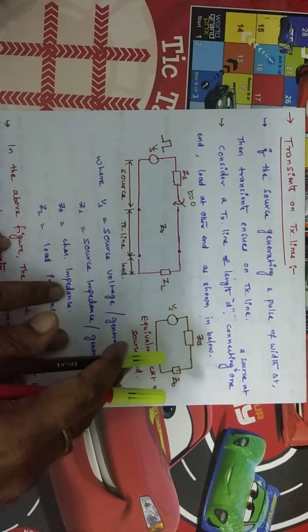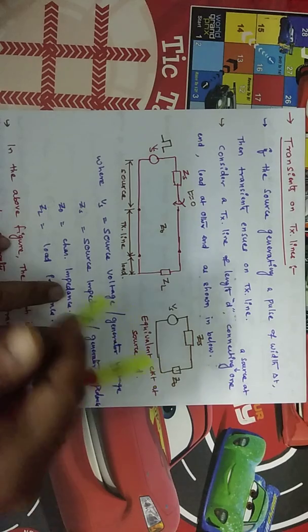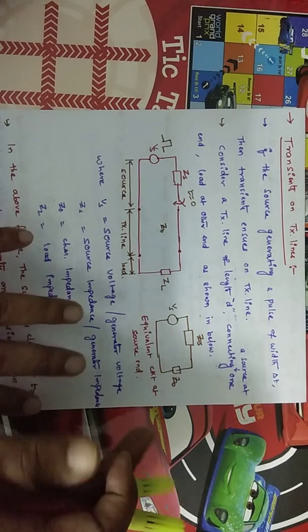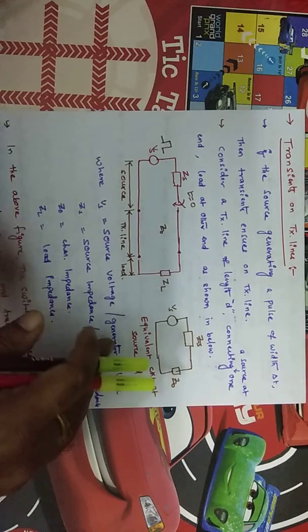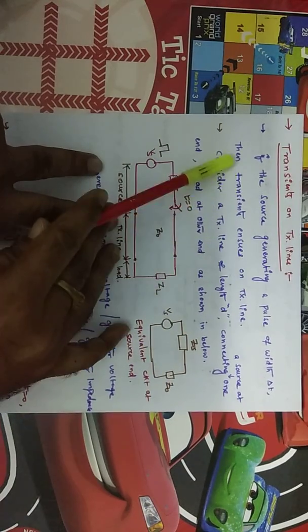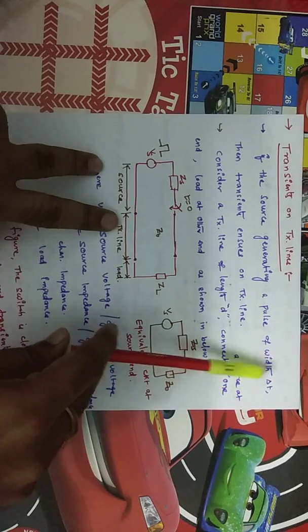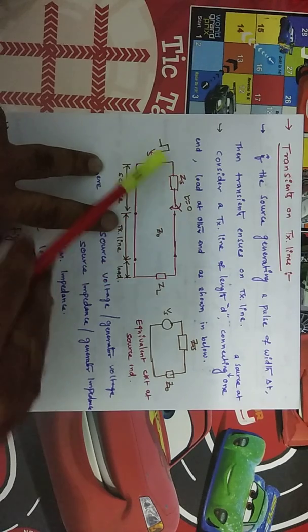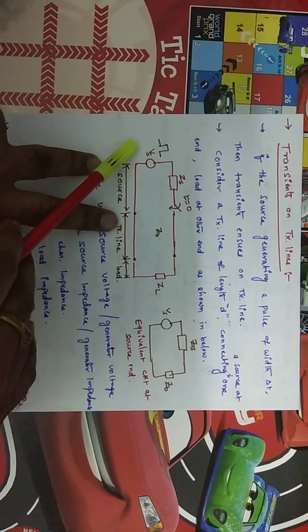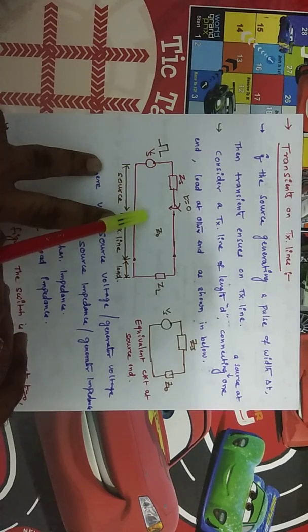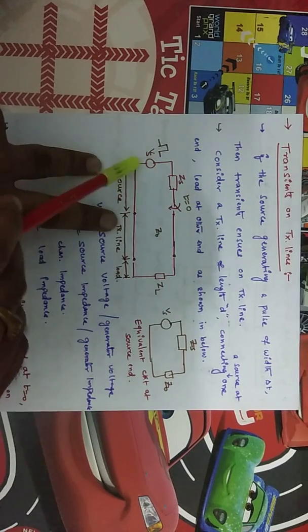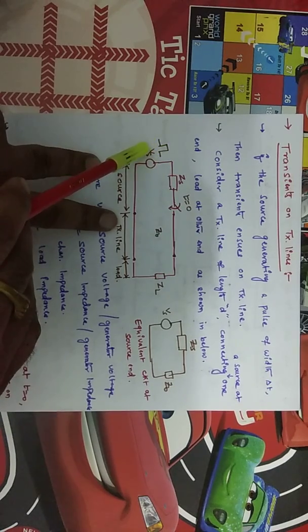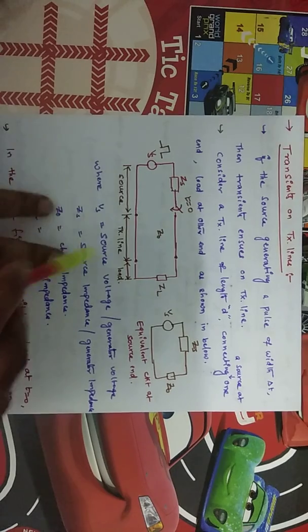There is a question in GATE 2015 about what transient means. Transient means as the wave is propagating from source to load, it changes as time changes. So generally the wave will be a function of both time and space. The amplitude of the wave changes with respect to time. Transients occur on a transmission line when the source is generating pulses of width delta t.